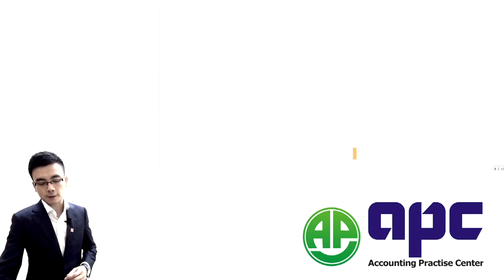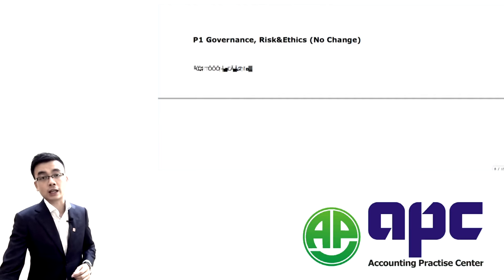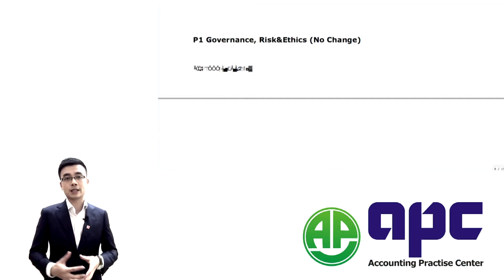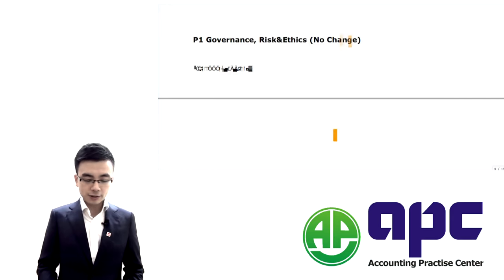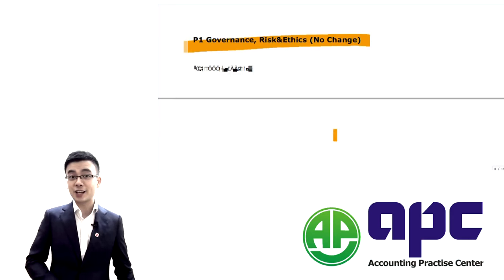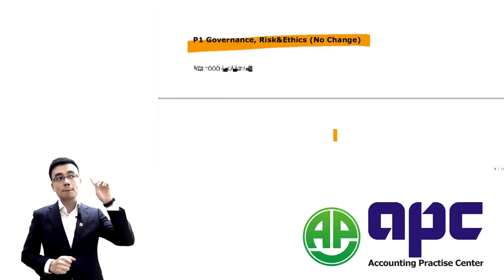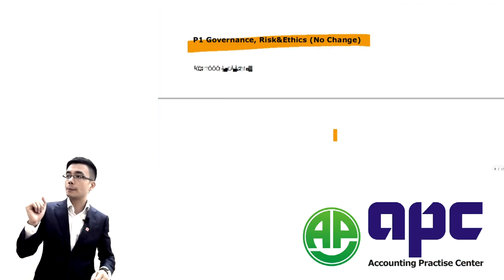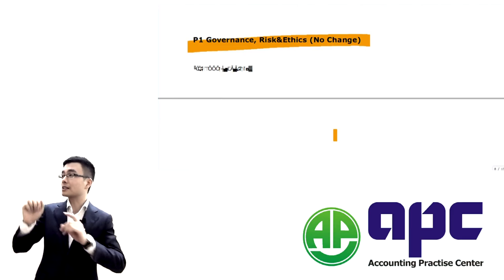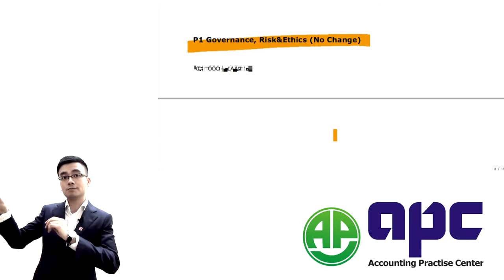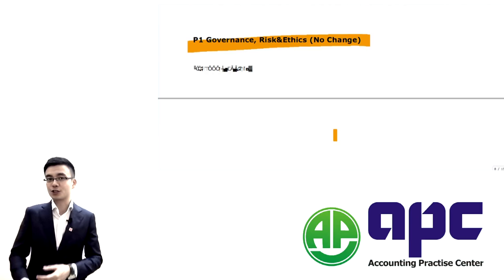P1, Governance, Risk and Ethics — good news again, no change in the syllabus. So the P-level papers P1, P2, and P3 syllabus does not change. But P4, P5, and P7 — I don't teach P6 — the syllabus has changed, especially for P5 where there are lots of changes.